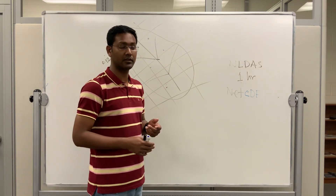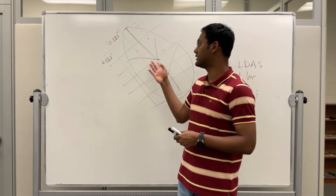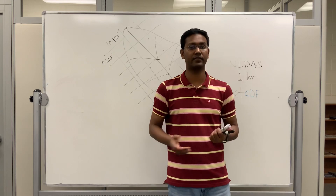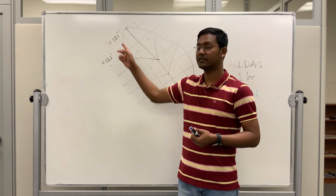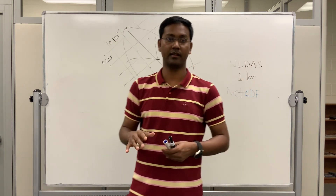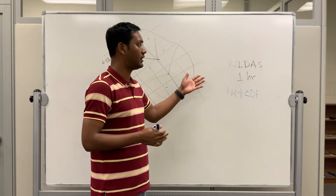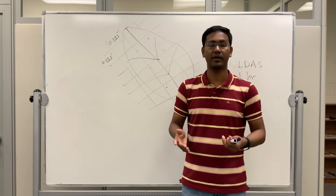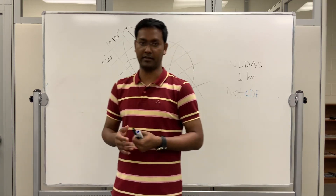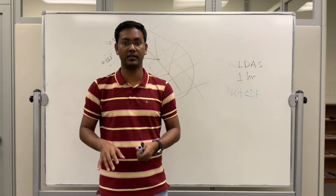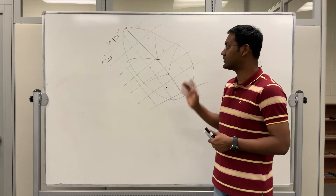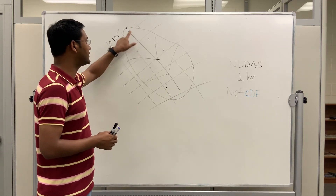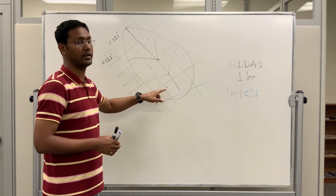We will extract only the rainfall or precipitation data and process it using GIS. To compute the basin average from the NetCDF file, since the grid size is in degrees, I have to project it into a projection system — I can use Albers Conic Equal Area, a State Plane, or a UTM projection system, depending on the accuracy requirement for the particular study area. Then I'll use the zonal statistics tool in GIS.